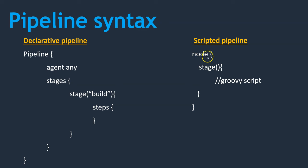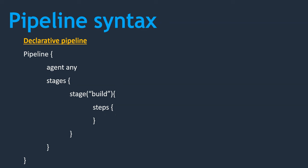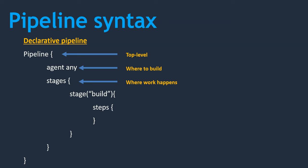Let's see the syntax. In the scripted pipeline the code starts with 'node', in the node block we have a stage block, and in the stage you need to write your work steps as Groovy script. Whereas in declarative pipeline it starts with 'pipeline', which is the top level where our script starts. Next you specify 'agent' — where do you want to run your Jenkins job. Then you have 'stages' where the work happens, and within stages you specify what activities you want to do. You may have multiple stages in each Jenkins job. This is how the declarative pipeline looks like.